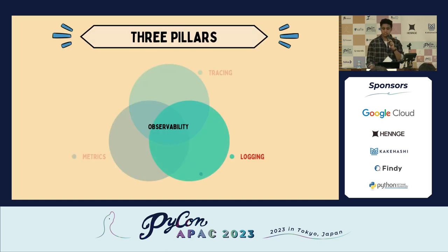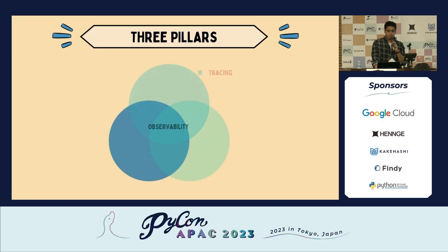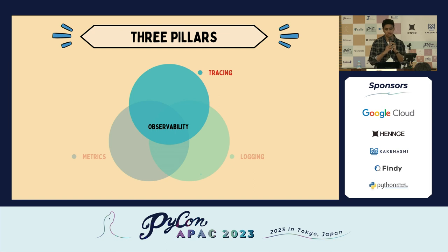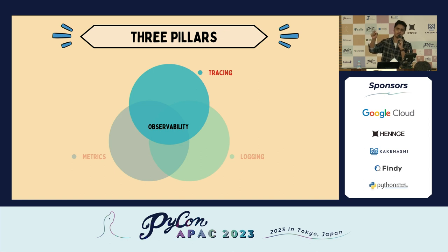Logging captures discrete events — the same logging we've been doing — providing detailed records and rich contextual information. Metrics give a quantitative view of the system: health checks in microservices, CPU usage, aggregated data usage, and error rates. The most important pillar for full observability is tracing — we want to know the journey of requests, passing a trace through each request so every single step is visible, helping us identify what's causing latency and bottlenecks.